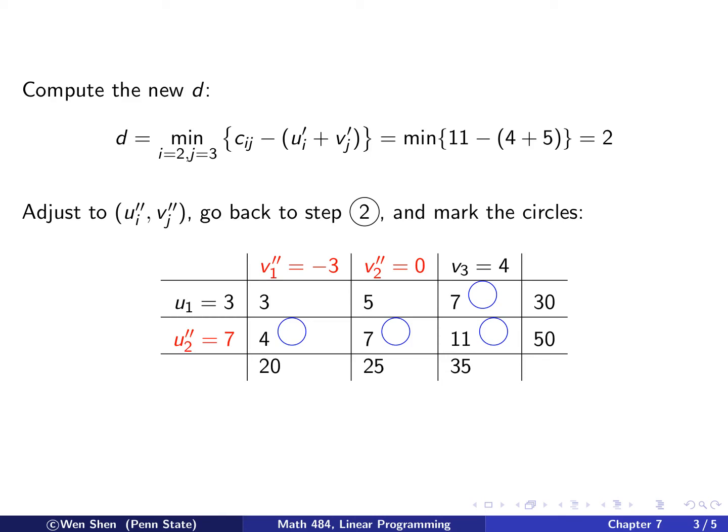And then we will adjust the u_i v_j value. Now we put double prime. And then we go back to step number 2. So let's put the adjustment already in the table. So now they are in red. Now v_1 is negative 3. v_2 is 0 because I subtracted 2. And then this one I added 2 units on that. And then we can mark the circles. So 3 minus 3 is 0, less than 3, not linked. 3 plus 0, less than 5, not linked. 3 plus 4 is 7, linked. 7 minus 3 is 4, linked. 7 plus 0 is 7, linked. 7 plus 4 is 11, linked.